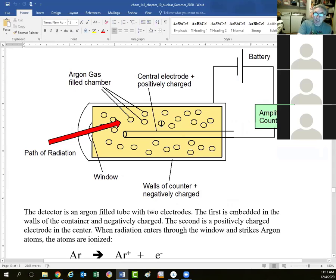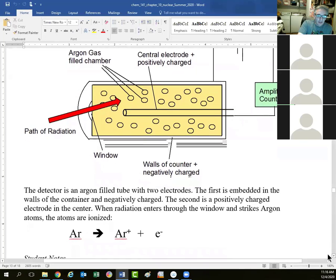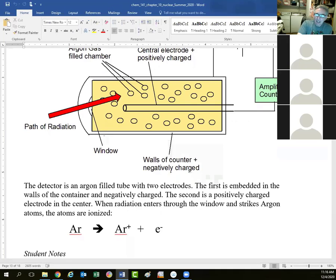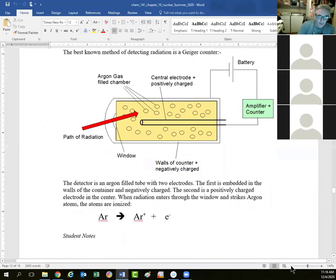And inside that microphone is a sealed chamber of argon gas. Because argon, one of the noble gases, it's not normally chemically reactive. But if radiation comes in through that open window, then as the radiation strikes those argon atoms, it causes the argon atoms to lose electrons. So we get ionization of the argon. Let's find my tools here. There we go. Let's use blue today.